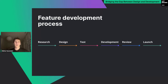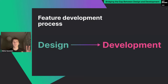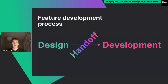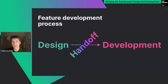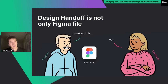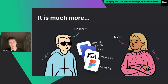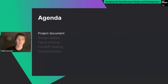Let's start with a short introduction about the feature development process. Here I listed some of the steps including research, design, tests, development, review, and launch. In general we can split it into two main parts — design and development — and the arrow in between is the handoff: the thing which translates the design into real UI and UX experienced by the user. This handoff is not simple — it's not only a Figma file or a few PNG images in Zeppelin.